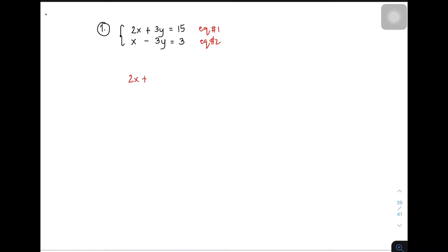Hanap muna kayo ng variable with the same coefficient pero magkaiba ng sign. Here in this problem, we have 3 and negative 3. We can eliminate the variable y. Copy the equations: 2x plus 3y equals 15, x minus 3y equals 3. You need to align the terms with like variables para madali nyo ma-apply yung elimination method. And then add them.